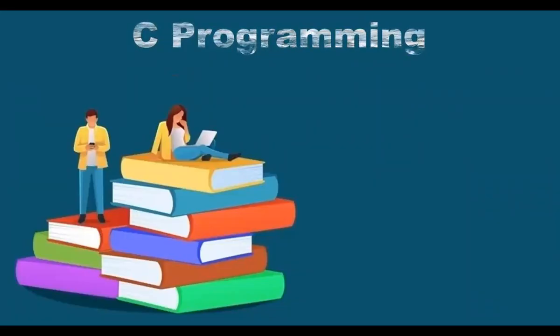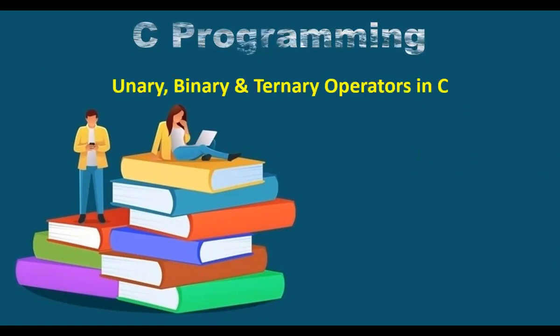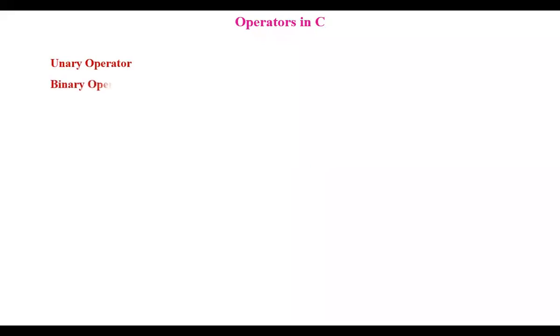Hi, welcome back to C Programming. Now we are going to see the unary, binary and ternary operators. So coming to these operators, there are three types and we will see them one by one.